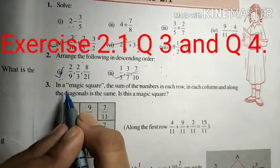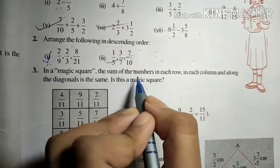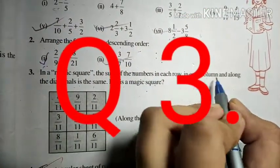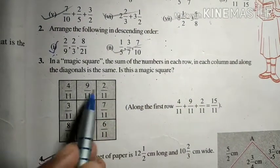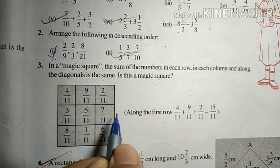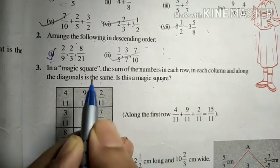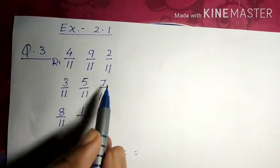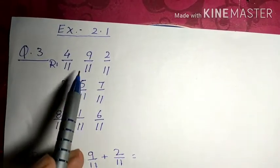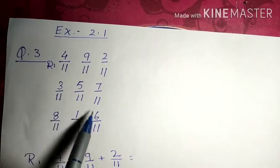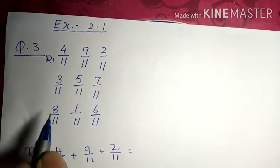Question number 3: In a magic square, the sum of the numbers in each row, in each column, and along the diagonals is the same. Is this a magic square? So there is a square given with lots of numbers and we have to find if this square is a magic square or not. If it is a magic square then all sum of the rows, columns and diagonals should be same. So now let's find it.